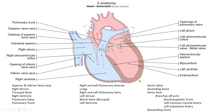The lungs oxygenate the blood. It comes back through the pulmonary veins — there are actually superior and inferior pulmonary veins on each side — bringing blood into the left atrium, through the bicuspid or mitral valve, into the left ventricle, and then out through the aortic valve and around through the ascending aorta, the aortic arch, and the descending aorta.